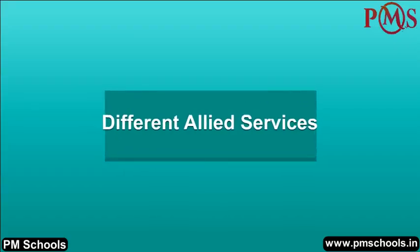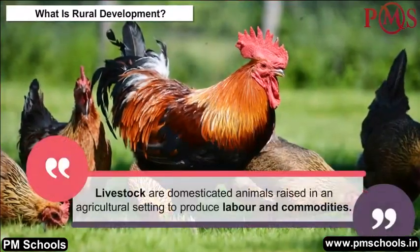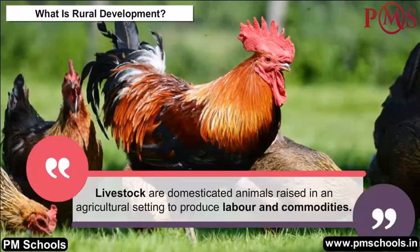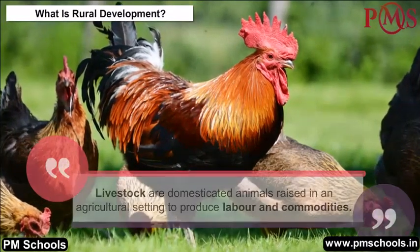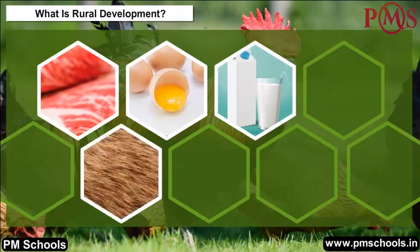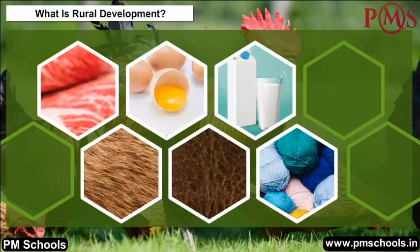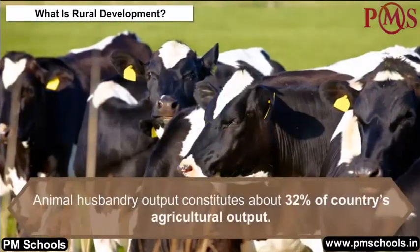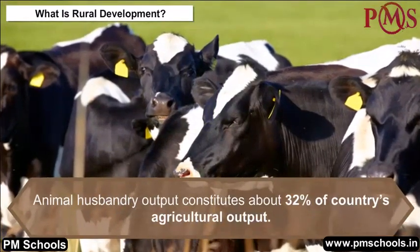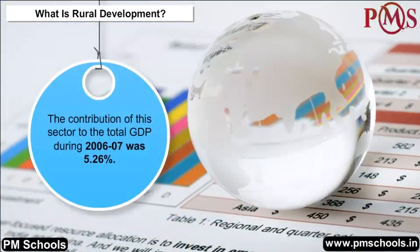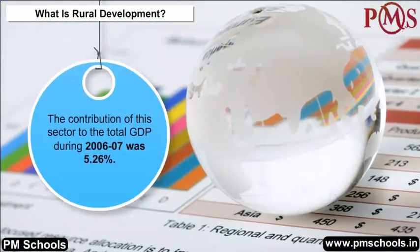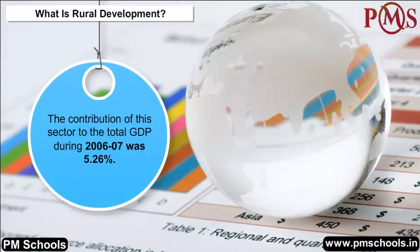Different Allied Services — Livestock: Livestock are domesticated animals raised in an agricultural setting to produce labour and commodities such as meat, eggs, milk, fur, leather, and wool. Animal husbandry output constitutes about 32% of the country's agricultural output. The contribution of this sector to total GDP during 2006–2007 was 5.26%.